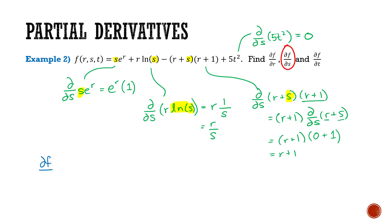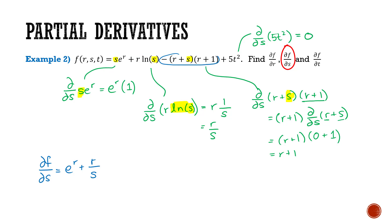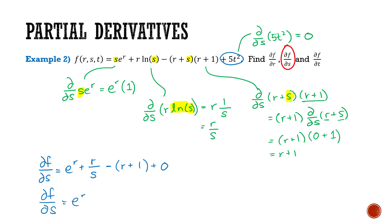Putting this all together, ∂f/∂s equals: the derivative of s·e^r is e^r, plus the derivative of r·ln(s) is r/s, minus the derivative of (r + s)(r + 1) which is r + 1, plus the derivative of 5t² which is 0. Simplifying, I get e^r + r/s − r − 1. And that's my derivative of f with respect to s.